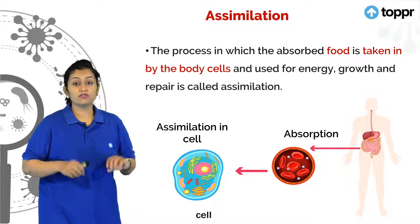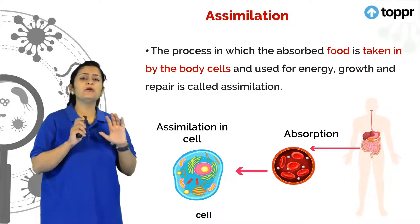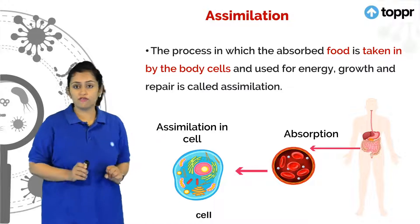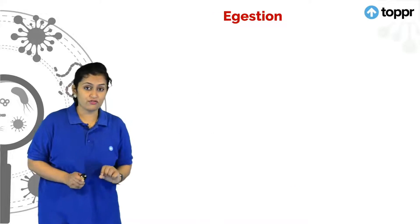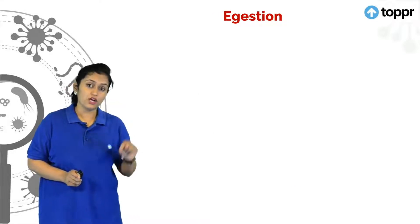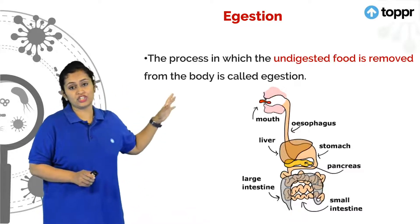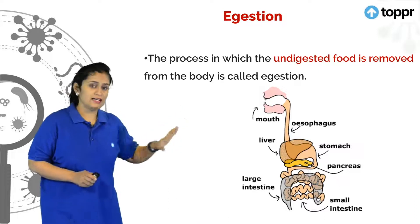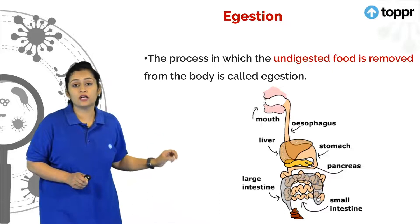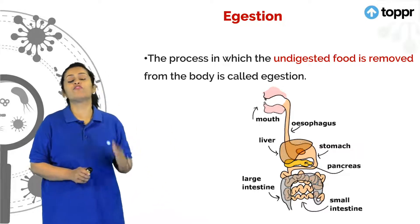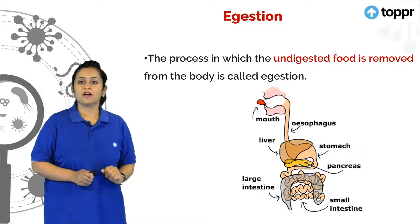Now, the food that we eat is really complex and we cannot digest the entire food. There are many unwanted substances present in our food, and such undigested food cannot be kept in our system — it has to be thrown out. That process is known as ejection. Whatever food we have taken in and digested in our various digestive organs, the undigested portion is finally removed from our body, and that process is called ejection.